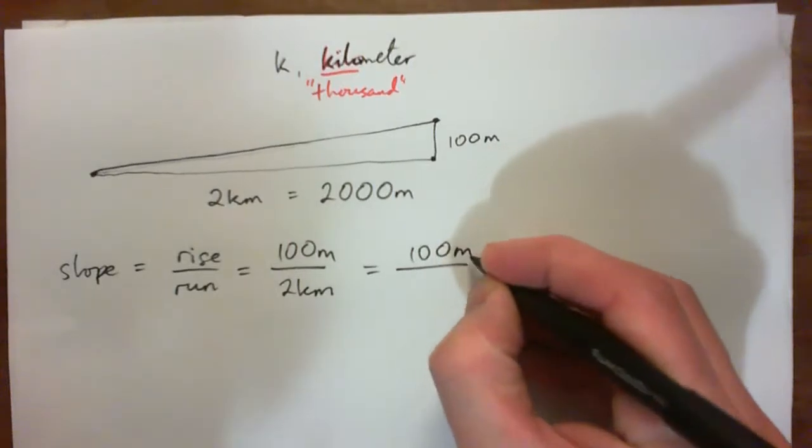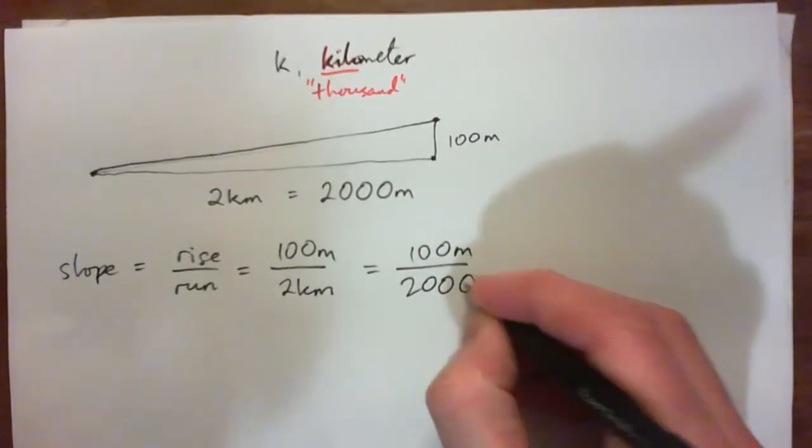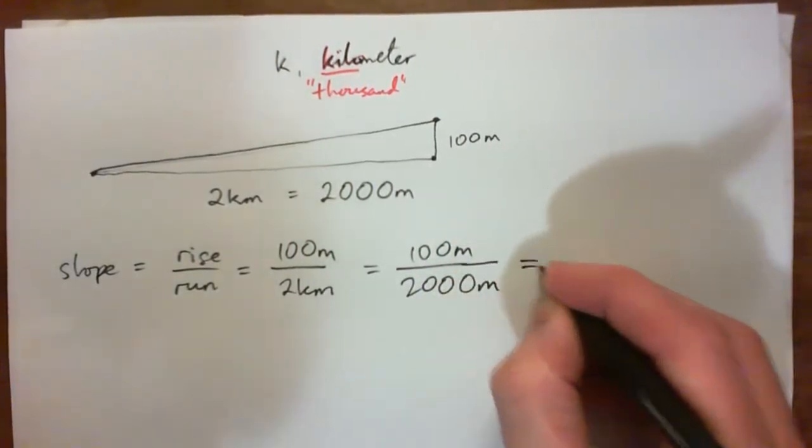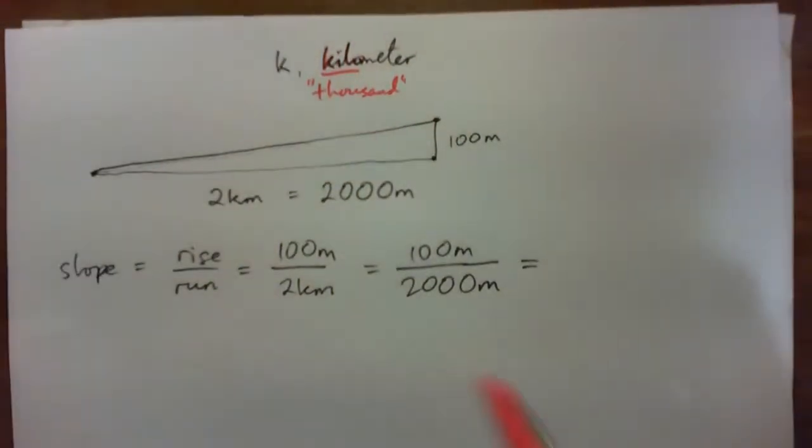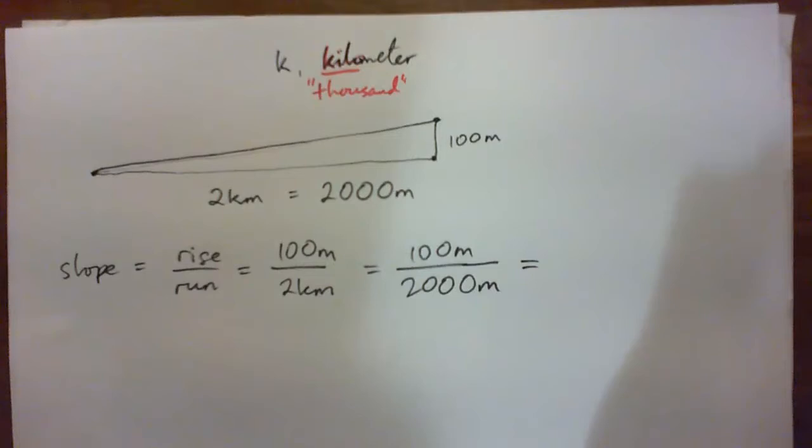So we have 100 meters over 2,000 meters. Now, that was the key probably. And now just press pause and go ahead and simplify that fraction, please. Okay, I hope you press pause and try to simplify it. I'm going to do it now.